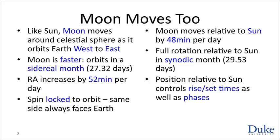The waxing quarter moon, when the moon is about six hours of right ascension to the east of the sun, rises six hours after the sun — so the waxing quarter moon rises at noon and sets around midnight, and is visible all afternoon. The full moon, where the moon is 12 hours of right ascension ahead of the sun — on the opposite side of the sky — rises at sunset and sets at sunrise. The waning quarter moon, where the moon is six hours to the west of the sun, rises six hours before the sun — rises about at midnight, sets about at noon — and is visible all morning.